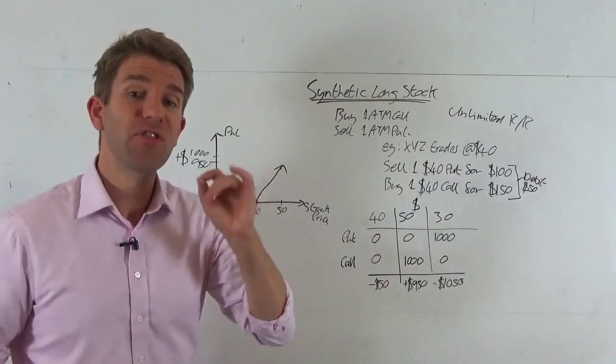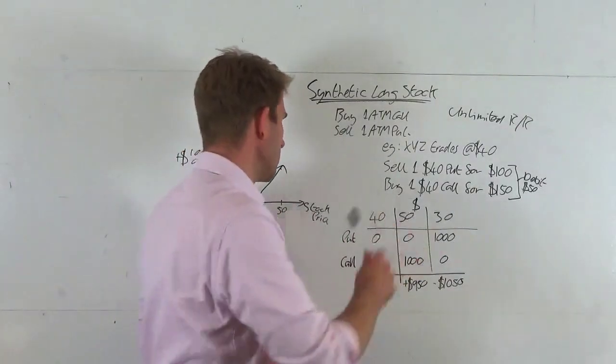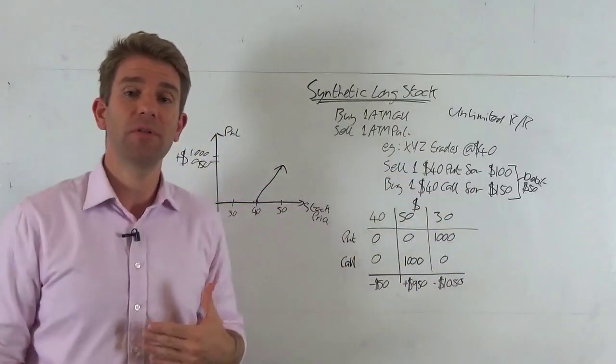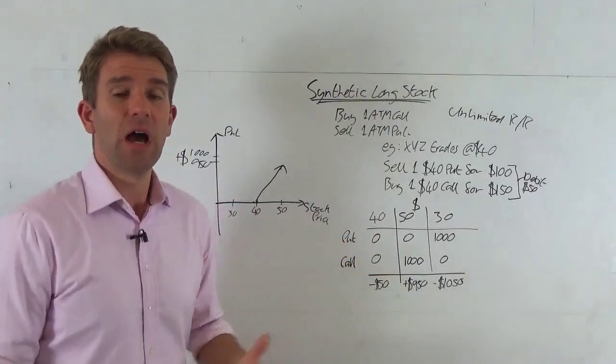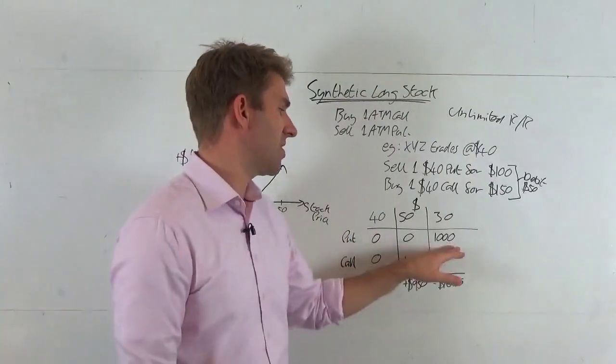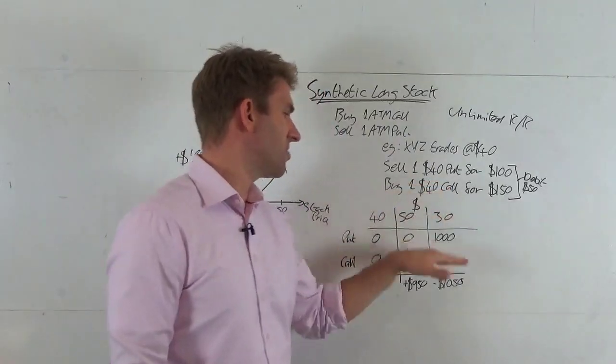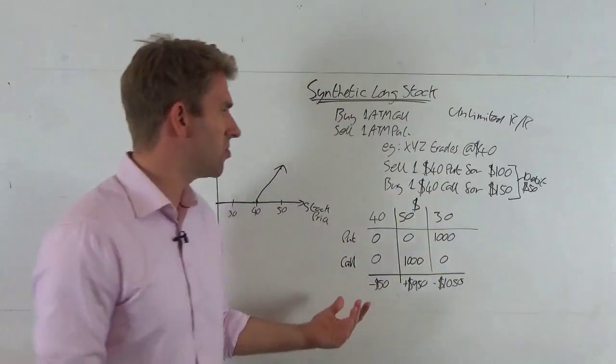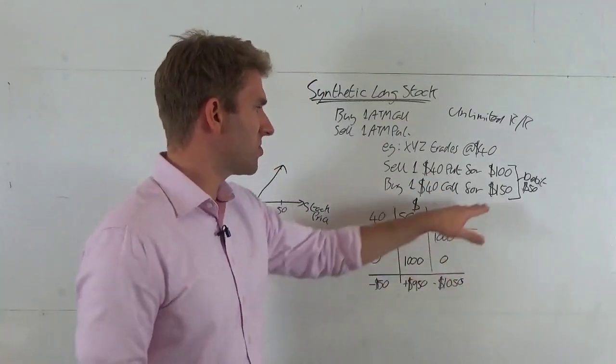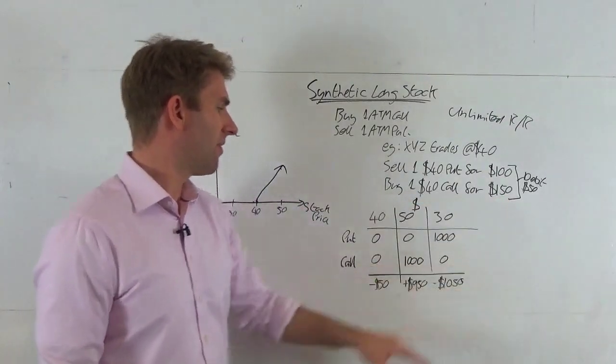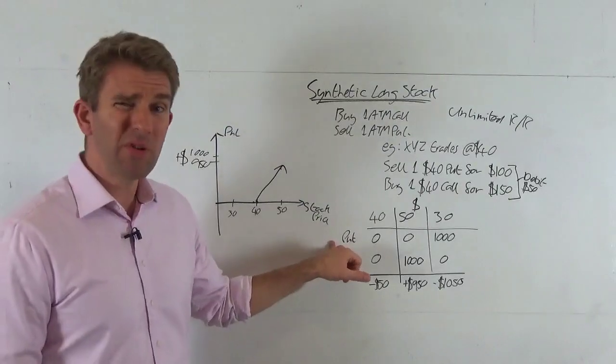So we can see what happens at $30. If we expire at $30, what happens to our put? I put a $40 put, it's got $10 worth of intrinsic value times 100, that's $1,000 worth of value in that contract. The call is the right to buy something at $40 that's currently trading at $30—that's got no value at all. So unfortunately we've lost $150 on that.